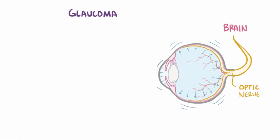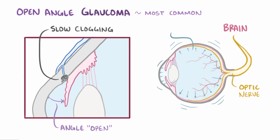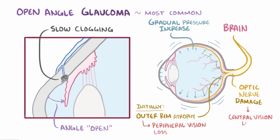There are a couple types of glaucoma. First there's open-angle glaucoma, which is actually the most common, and it has this name because the angle between the cornea and the iris is open. In this type, the drainage system slowly gets clogged over time, and so there's a gradual increase in pressure on the optic nerve. This increase in pressure initially results in atrophy of the outer rim of the nerve, resulting in a decrease in peripheral vision. As that pressure increases even more, there's continued damage to the optic nerve, which eventually leads to a loss in central vision as well.